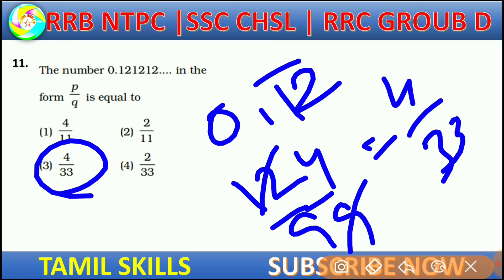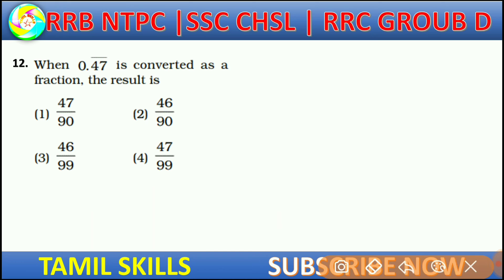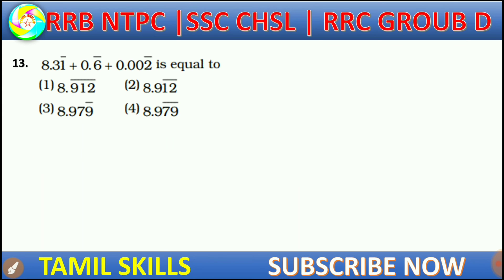So if you can get these 3 models, you have what you need. OK guys, let's go. For example, 0.47 bar equals 47 by 99. So the answer is option 4. OK friends, that is Type 1. If you look at the next question, it is Type 2. It's very simple, friends.